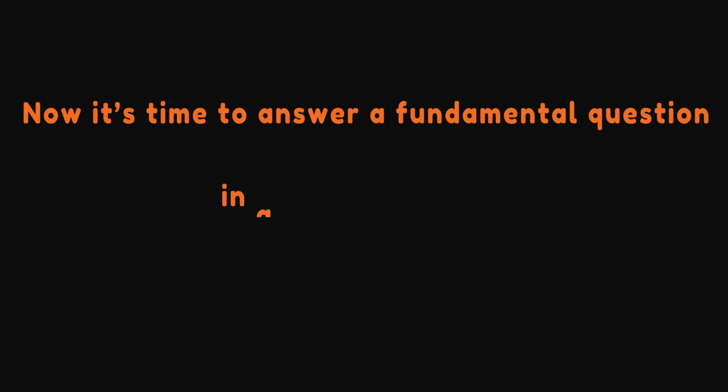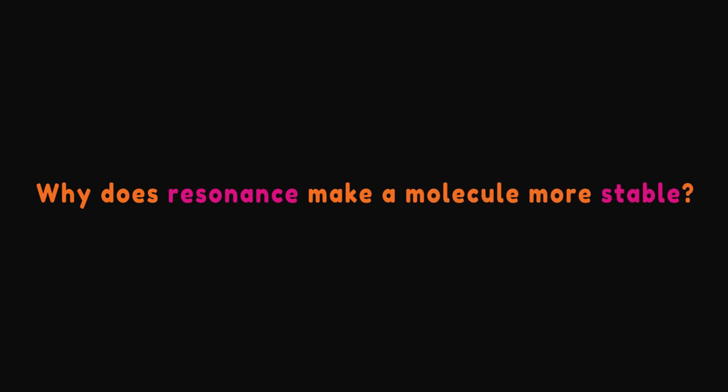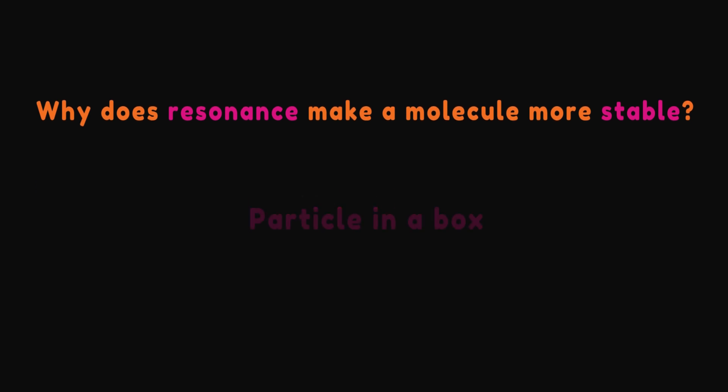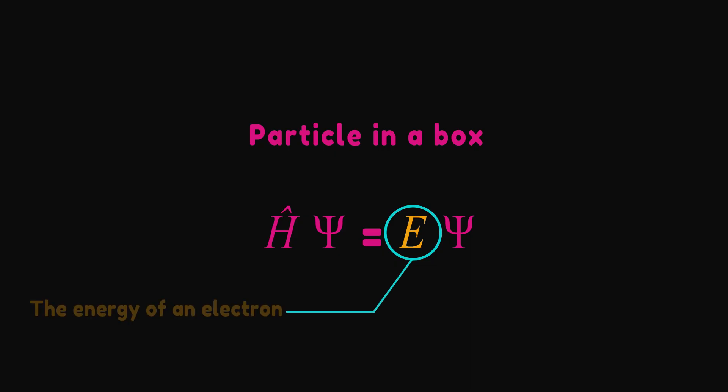Now it's time to answer the fundamental question in a convenient way: Why does resonance make a molecule more stable? The answer has its root in physical chemistry classes called the particle in a box calculation. Finding the energy of an electron is possible when we can solve the Schrodinger equation.